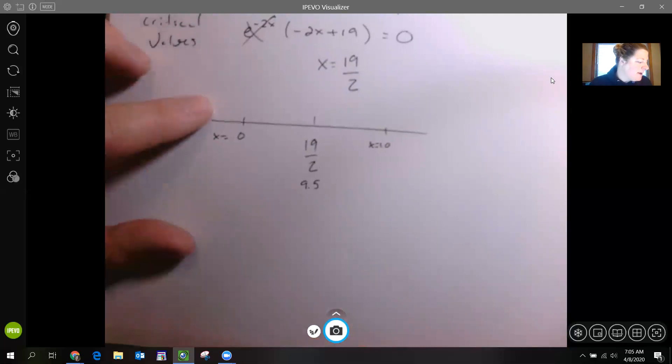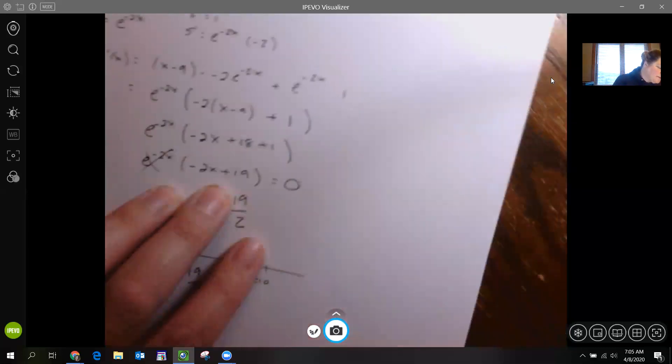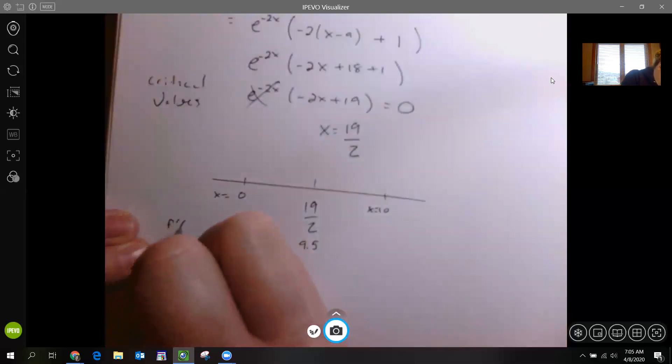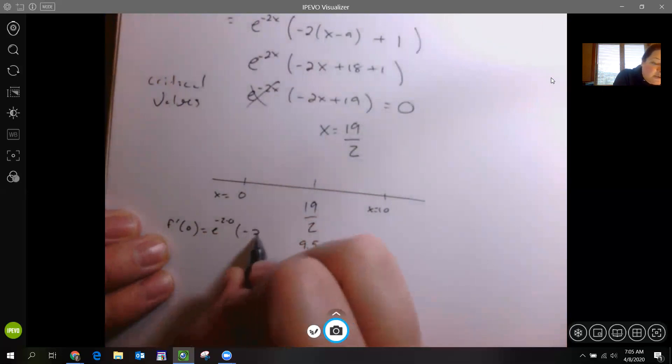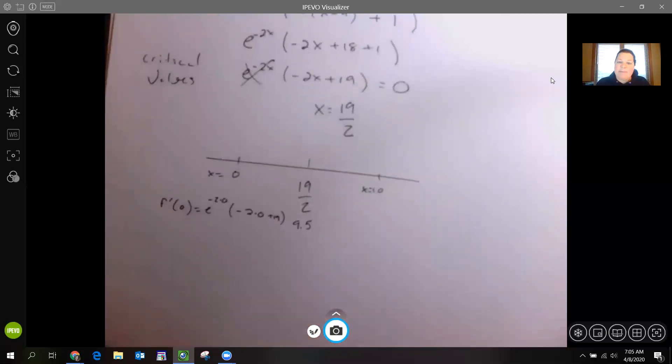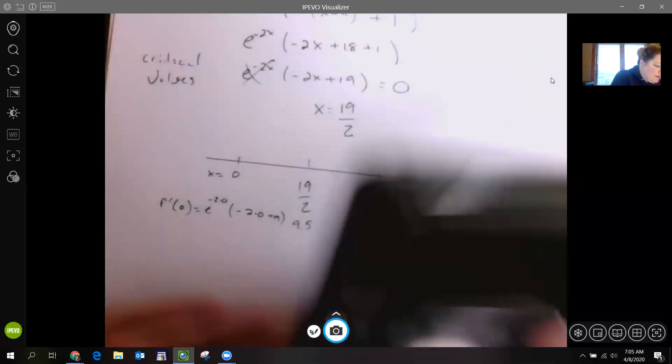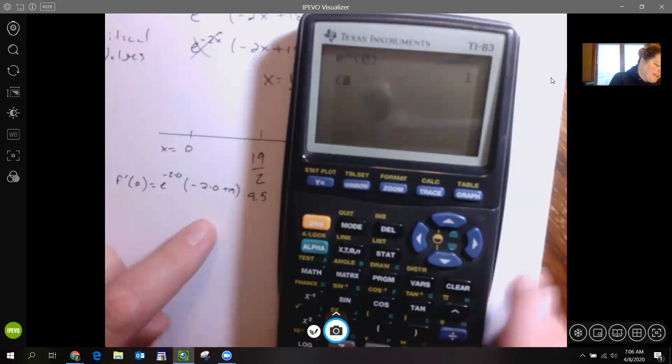I don't really need to mark them on my graph. I'm going to use my calculator and put 0 into my derivative. Here's my derivative simplified right here. I'm going to take my derivative at 0, so I'll have e to the negative 2 times 0, and then I'll have negative 2 times 0 plus 19. E to the 0 equals 1, and then I would have 0 plus 19. So 0 plus 19 is positive.